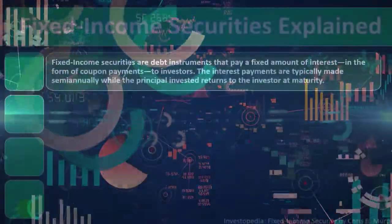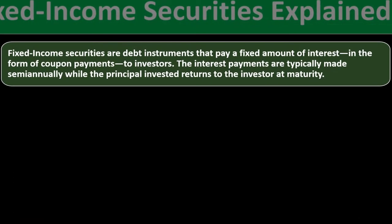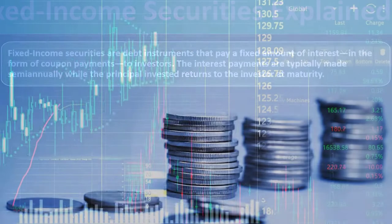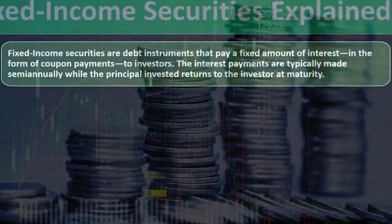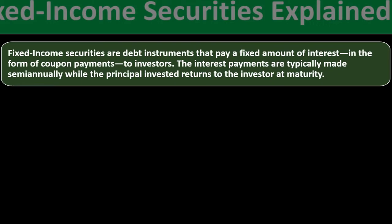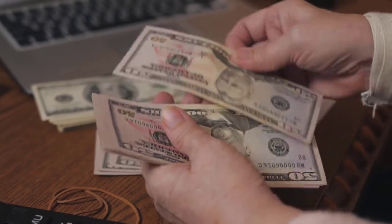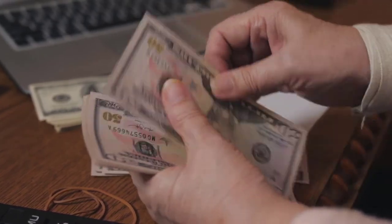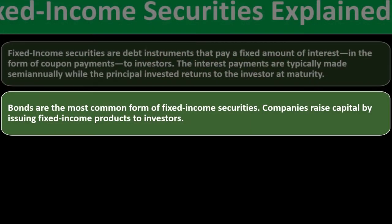Fixed income securities are debt instruments that pay a fixed amount of interest in the form of coupon payments to investors. A coupon payment is essentially the interest payment. Generally, interest payments are made semi-annually while the principal invested returns to the investor at maturity — so you get periodic interest payments and then the return of the principal loan at the end.